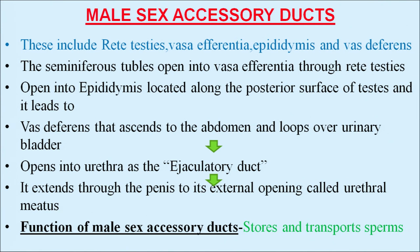Male sex accessory ducts include rete testis, vasa efferentia, epididymis, and vas deferens. The seminiferous tubules open into vasa efferentia through rete testis, which open into the epididymis located along the posterior surface of the testes, and it leads to the vas deferens which ascends into the abdomen and loops over the urinary bladder.